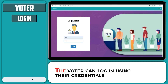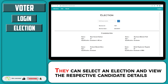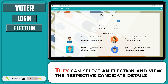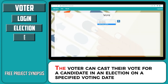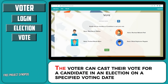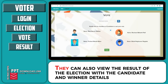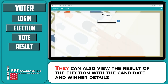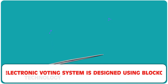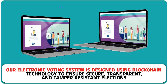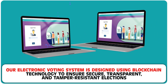The voter can login using their credentials. They can select an election and view the respective candidate details. The voter can cast their vote for a candidate in an election on a specified voting date. They can also view the result of the election with the candidate and winner details. Our electronic voting system is designed using blockchain technology to ensure secure, transparent, and tamper-resistant elections.